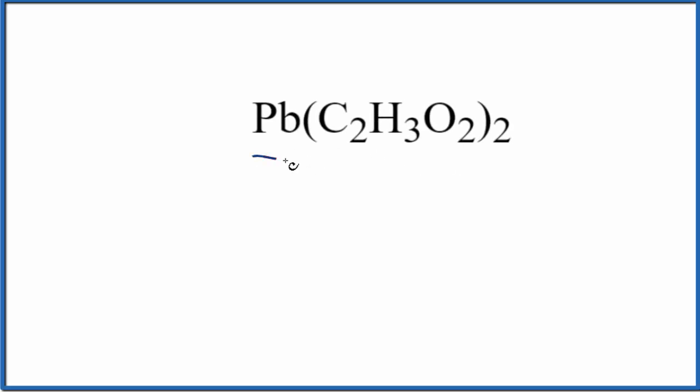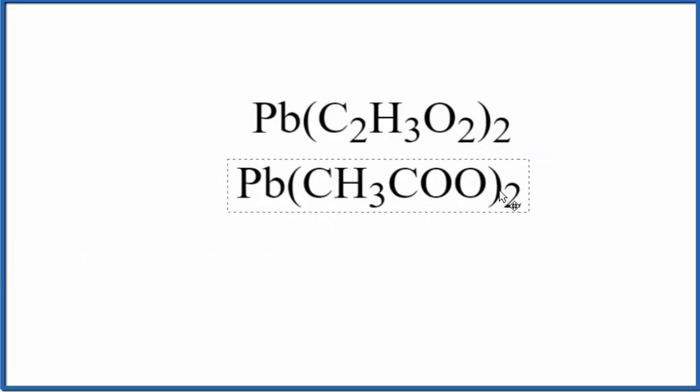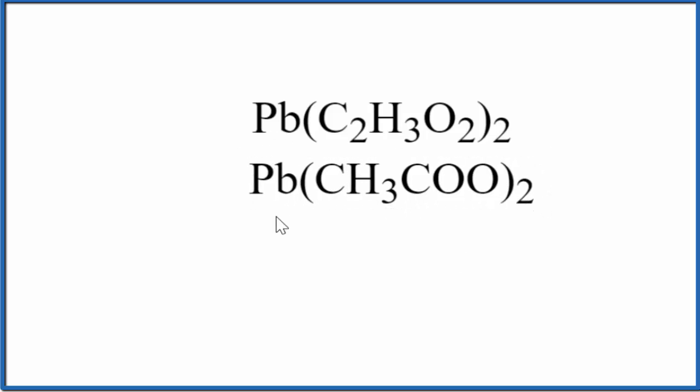Let's write the name for Pb(C2H3O2)2, which can also be written as Pb(CH3COO)2. In this case we have lead and the acetate ion. This is just another way to write the acetate ion. Let's work with the one on top in this video.